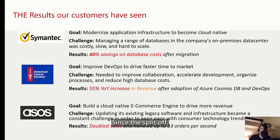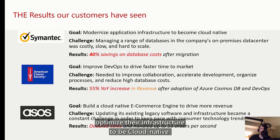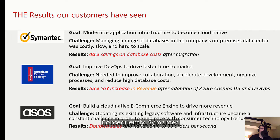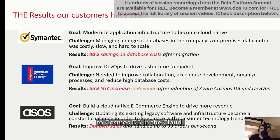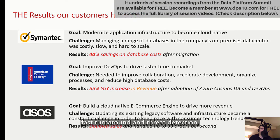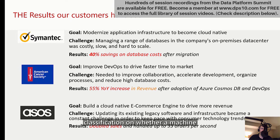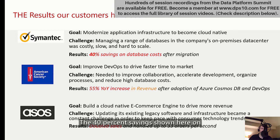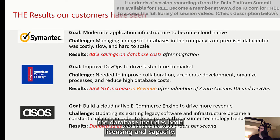I'll start with Symantec — since the split off, they've become Norton LifeLock. Their goal was to optimize their infrastructure to be cloud native, as they needed to forecast cybersecurity events. They were using an on-premise non-relational database, but it wasn't meeting their needs. Consequently, Symantec migrated their virus and malware tracking system to Cosmos DB in the cloud. Cosmos DB enabled fast turnaround on threat detection to detect and block traffic, with a 40% savings on the database including both licensing and capacity.